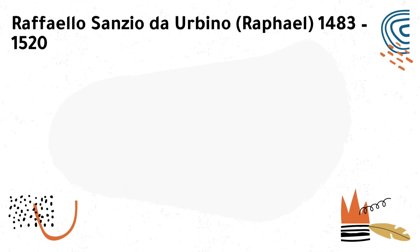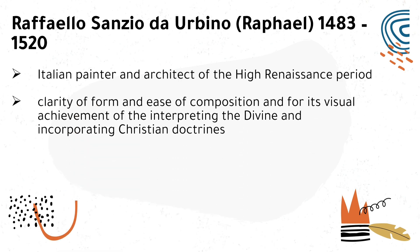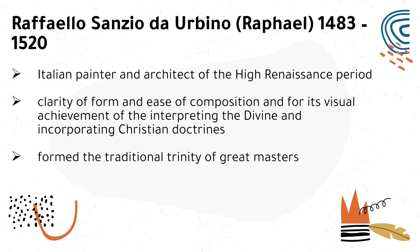The next artist during this period is Raffaello Sanzio d'Urbino, also known as Raphael. He was an Italian painter and architect of the High Renaissance period. His work was admired for its clarity of form and ease of composition and for its visual achievement of interpreting the divine and incorporating Christian doctrines. He also formed the traditional trinity of great masters together with Michelangelo and Da Vinci.